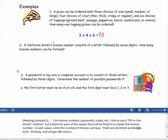Example 2: A California driver's license number consists of a letter followed by seven digits. How many license numbers can be formed? For license numbers, passwords, codes, etc., I like to use a fill-in-the-blanks method. Put a blank for each of the spaces that will be filled in to create the license number. So, one space for the letter and seven spaces for the digits.